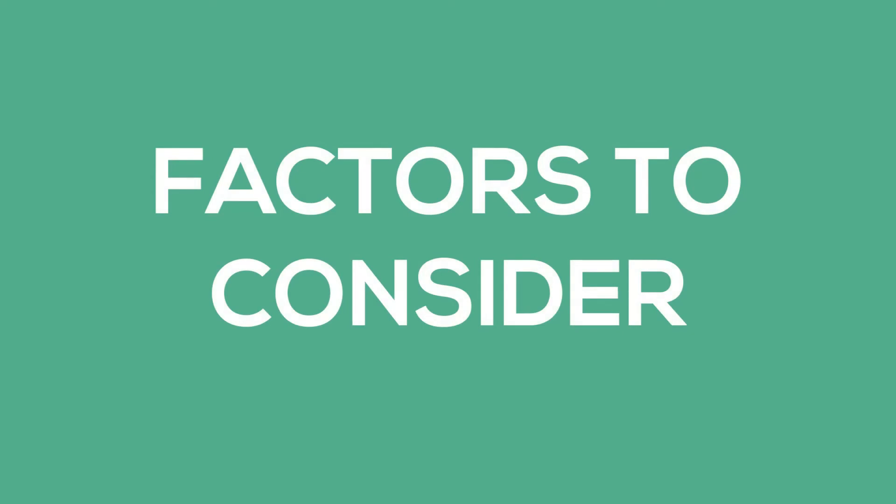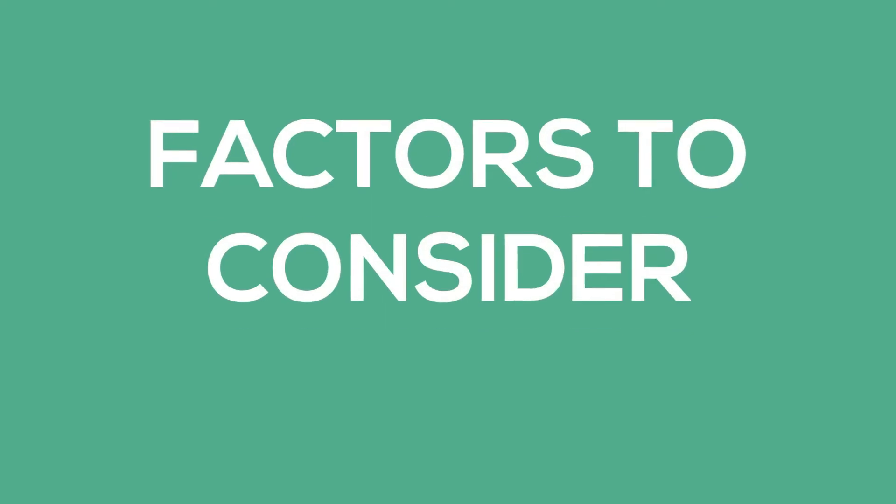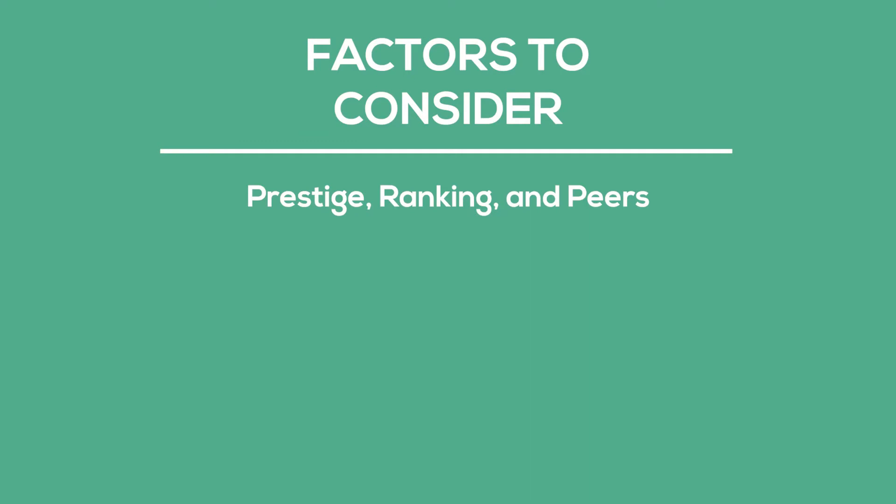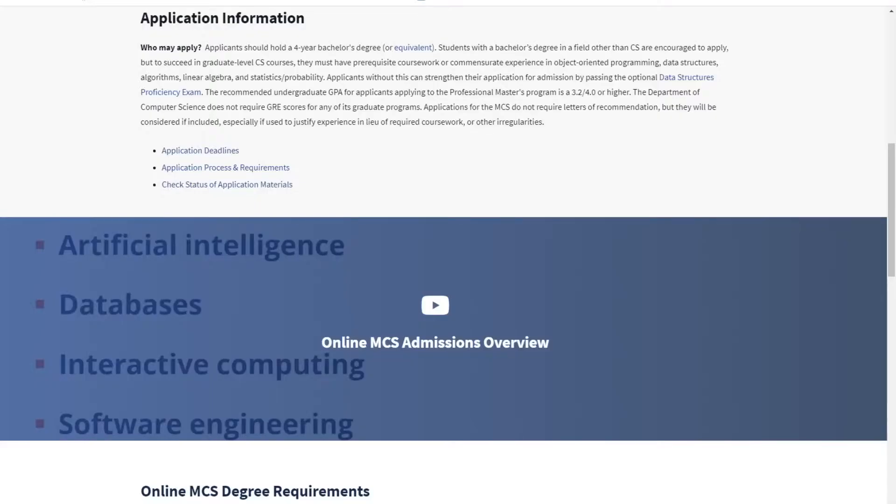Some factors to consider when searching for programs: prestige and ranking, peers, course catalog, platform, regional appeal, and cost. When it comes to ranking and prestige, sometimes people get lost in the numbers, but for most scenarios the ranking doesn't really matter all that much. That said, it shouldn't be ignored — the higher the ranking and prestige, the better candidates it attracts, meaning stronger peers in your cohort. You'll be working with these people for two-plus years, so the stronger the cohort the better.